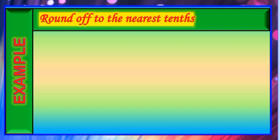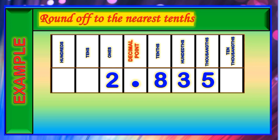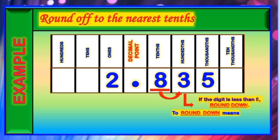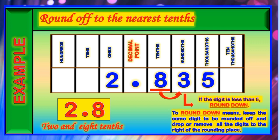Let us put these steps into an example. First, let us round off to the nearest tenths. The given decimal number is 2.835. The digit in the rounding place is the digit 8, and the digit to its right is the digit 3. Since 3 is less than 5, we are going to round down — we retain 8 and drop the digits 3 and 5. Therefore, the rounded number is 2 and 8 tenths.